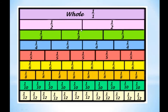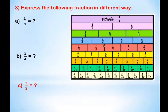Using this fraction wall, you will find which fraction is equal to what. Look at this: if I want to see one by two, wherever this line matches and coincides with another line, that fraction is equal. One by two is equal to two by four, two by six, three by six, four by eight, five by ten, and six by twelve.